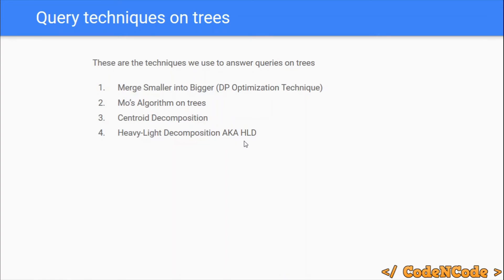Finally, HLD — Heavy Light Decomposition — applies a segment tree to answer path queries and possibly subtree queries as well. It decomposes the whole tree into chains, converts the tree into a linear array, and applies a segment tree. Queries take O(log² n) time: one log factor from the segment tree and another because we traverse at most O(log n) chains to get from node A to node B.